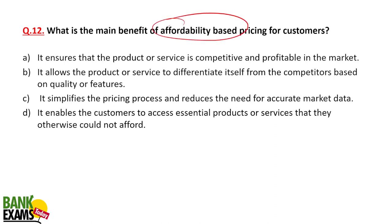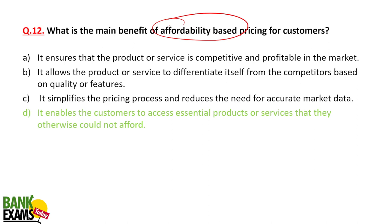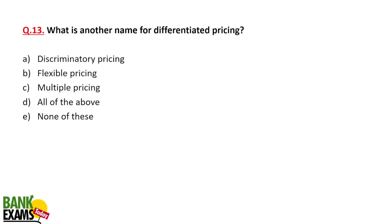What is the main benefit of affordability based pricing? In the case of government schools, the government wants to provide education to everybody at an affordable price. For example, the fee at a government school might be just 20 rupees per month. The main benefit is that it enables customers to access essential products or services they otherwise couldn't afford — whether that's education or food.